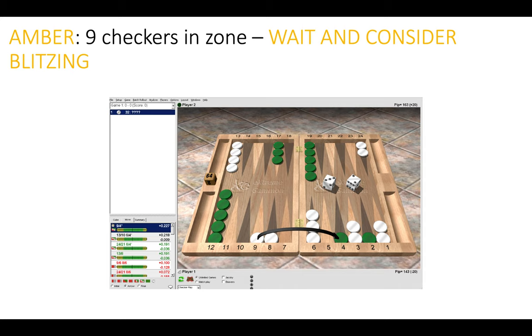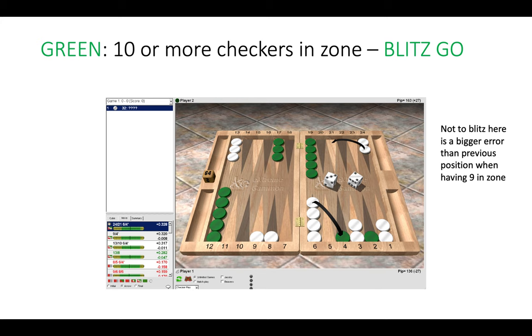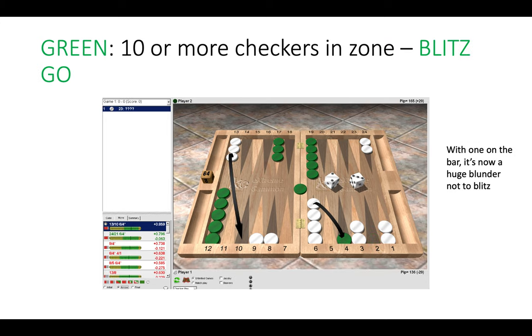And now we go on to the final third category of the traffic light system, which is green. Here we have 10 checkers in the zone and now it is correct to make the hit. Playing 13 to 8 is a much bigger error than before, and if we were to adjust this position further and place one of green's checkers on the bar, now hitting is mandatory. By not hitting here we would be committing a very big blunder.